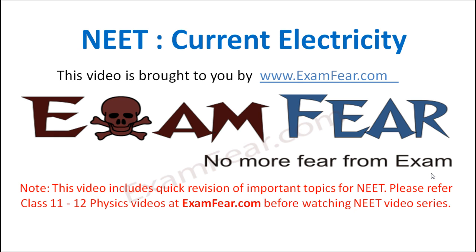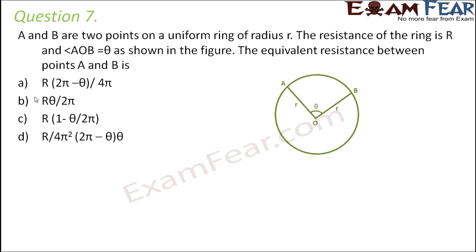Hello friends, this video on NEET current electricity is brought to you by examfear.com — no more fear from exams. Question number 7: A and B are two points on a uniform ring of radius r. The resistance of the ring is R and angle AOB is equal to theta as shown in the figure. The equivalent resistance between points A and B is?